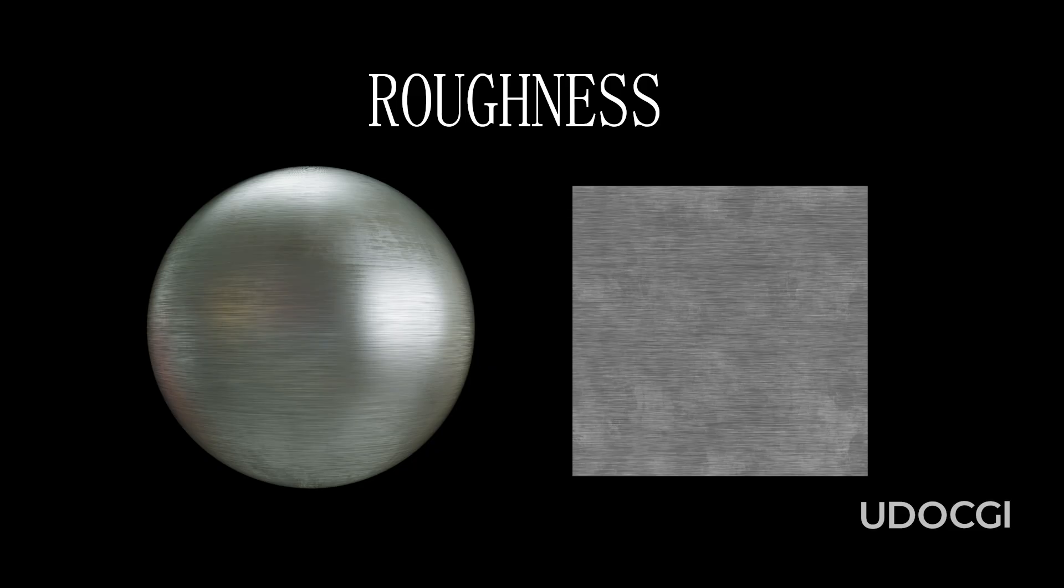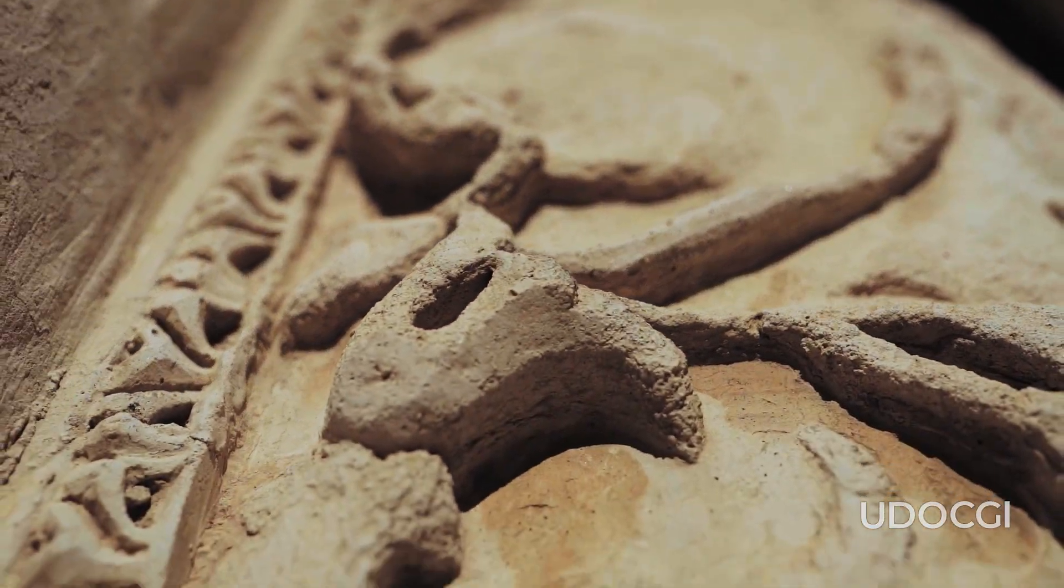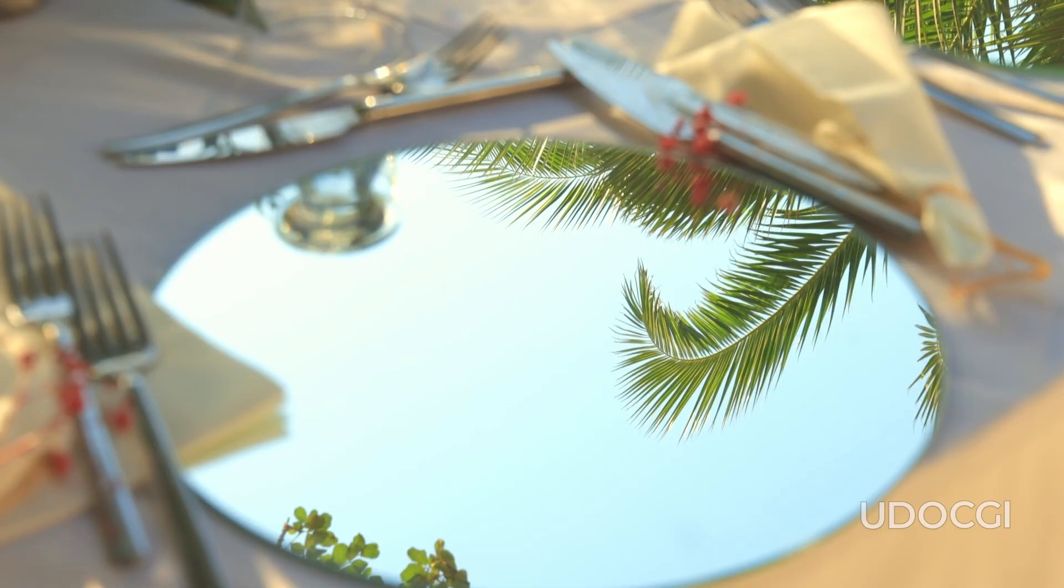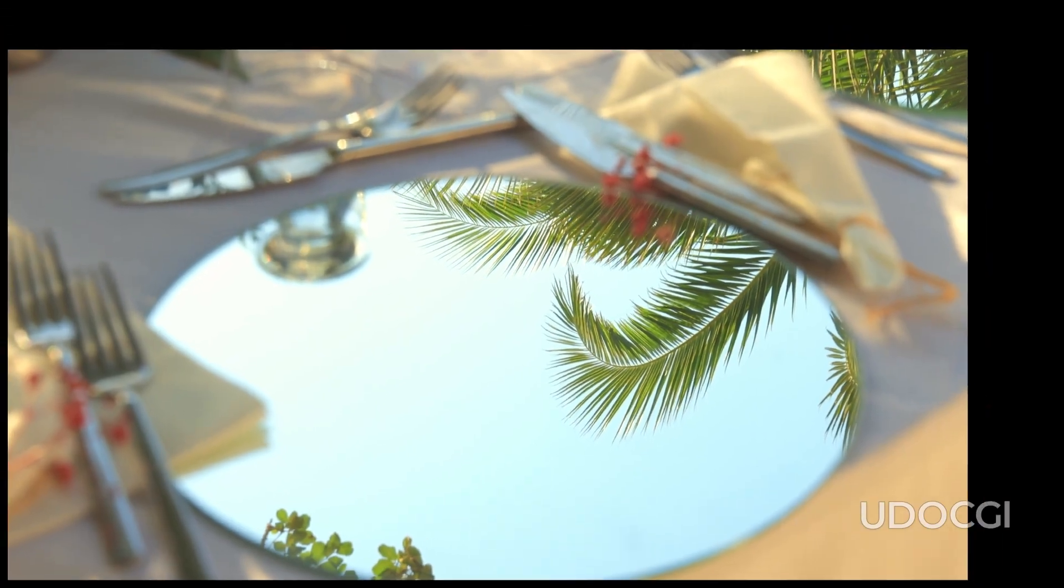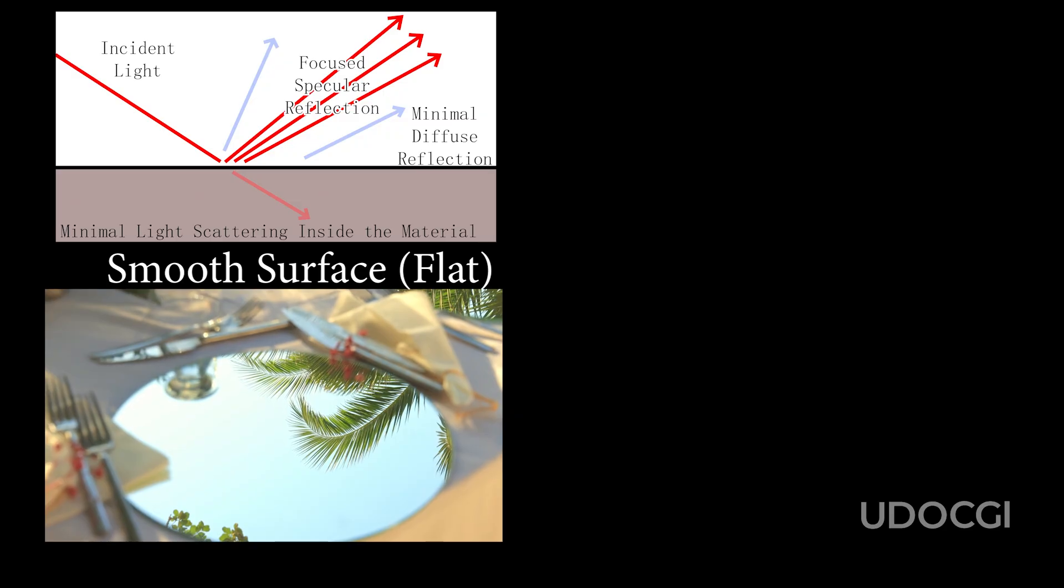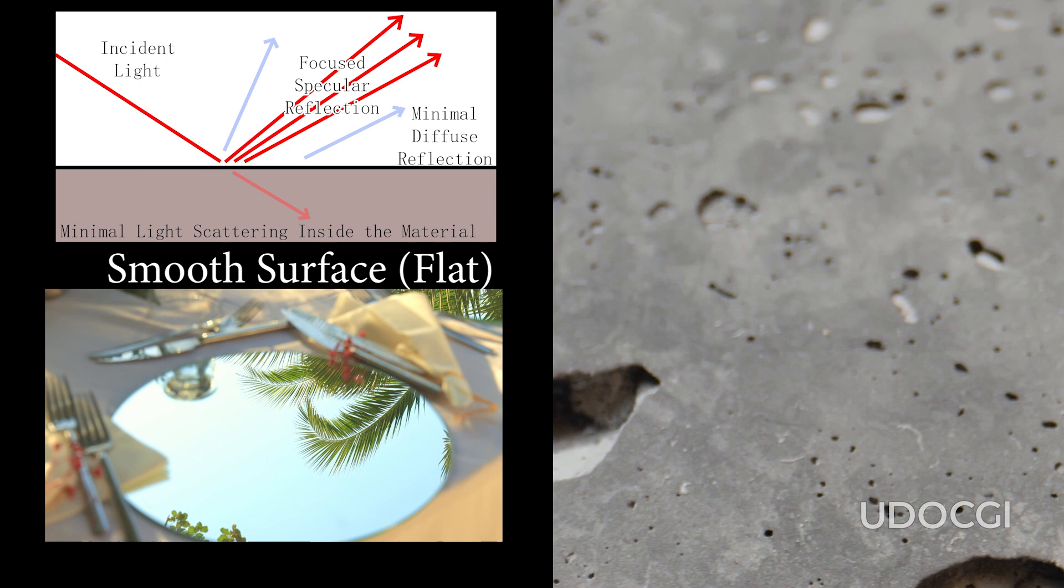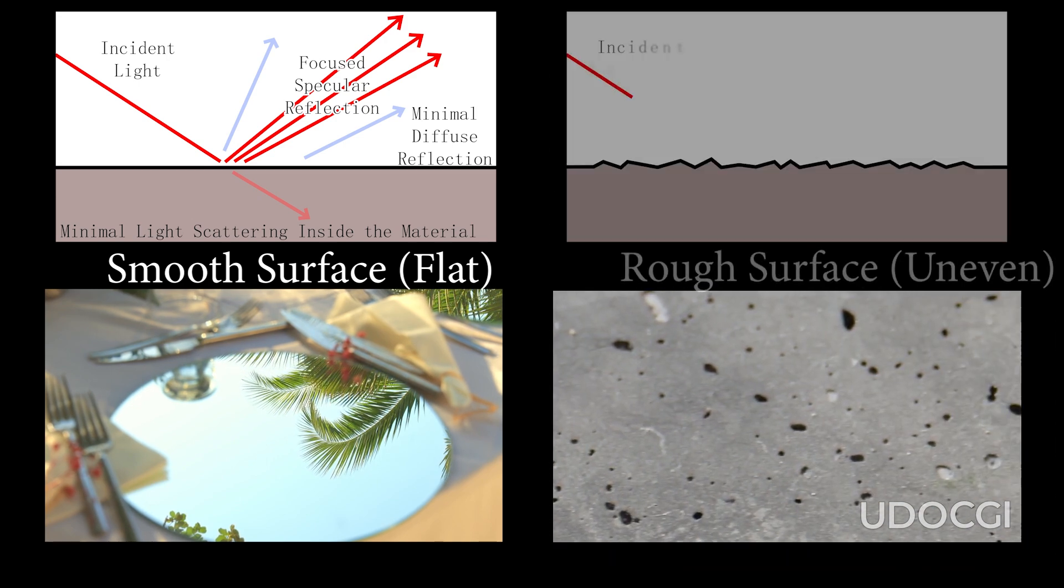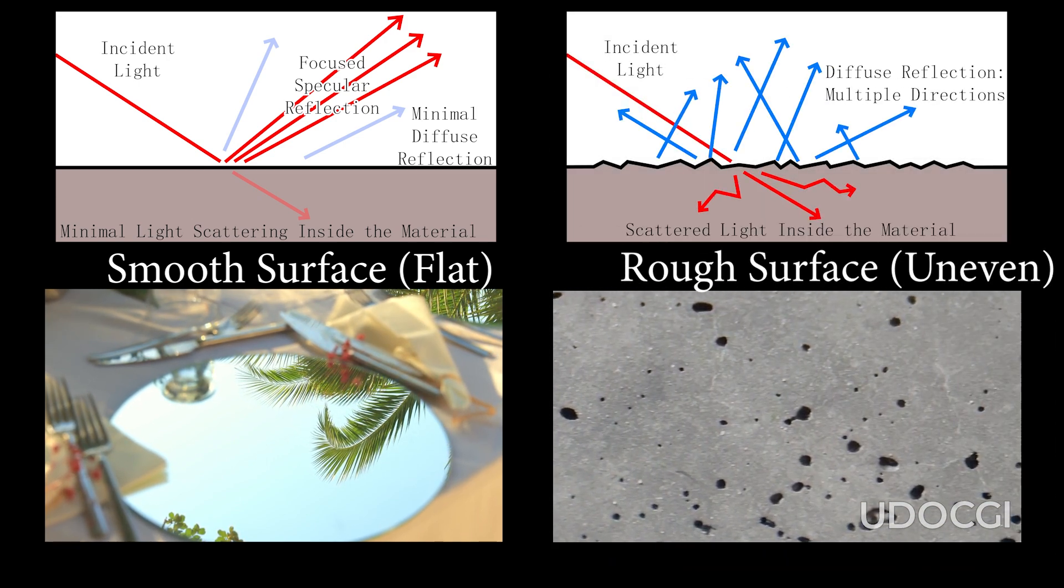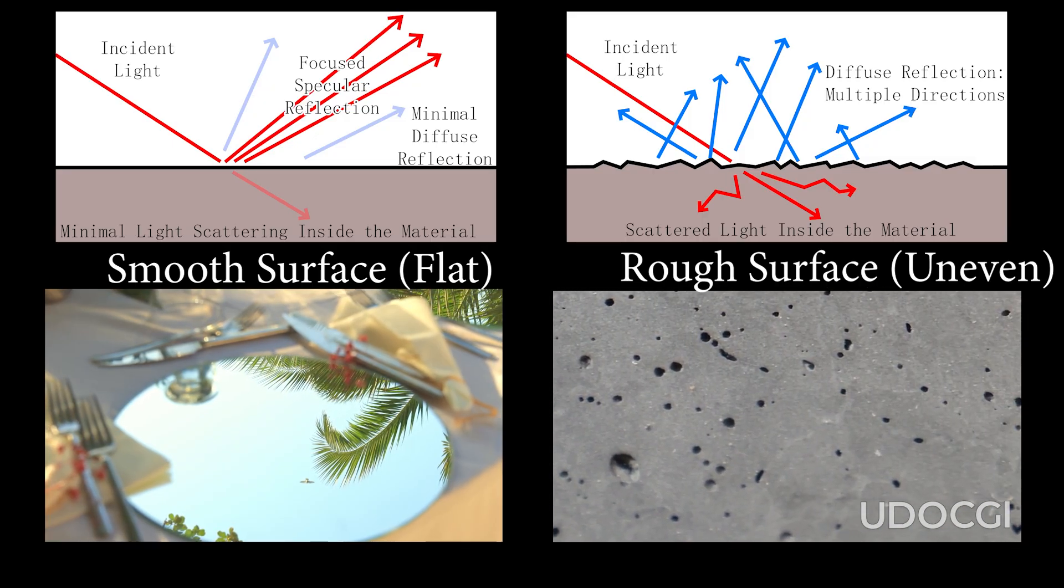The roughness map determines how smooth or rough a surface appears. Smooth, shiny surfaces are typically flat, while rough, matte surfaces are uneven. When light hits a flat surface, such as a mirror or polished metal, it bounces back evenly, creating a shiny, reflective appearance. On the other hand, light hitting an uneven surface, like concrete or sandpaper, scatters in various directions, resulting in a matte appearance where the material's color is more visible than the environment's reflection.